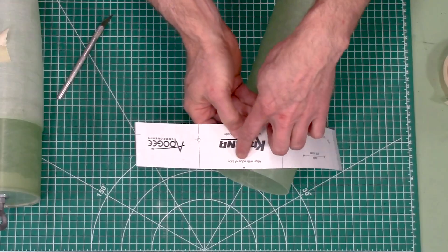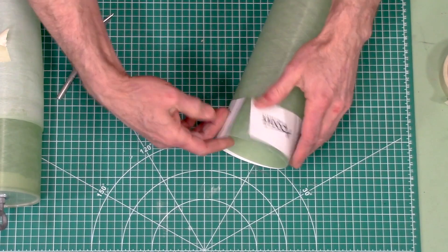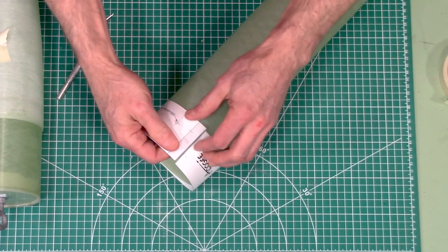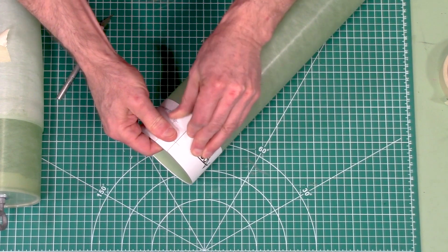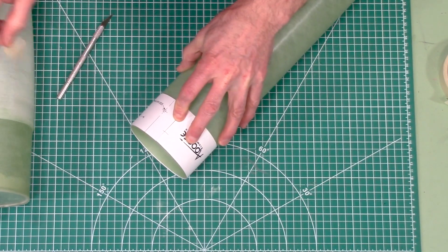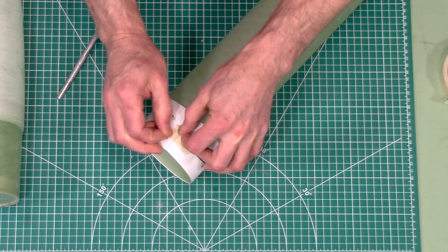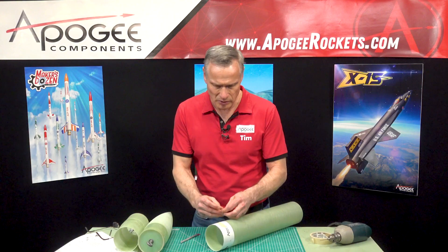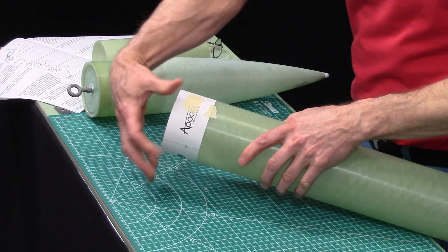On one end it'll say align with the edge of the tube so that's the direction it's going to go. Wrap it around the tube. Line up these lines right here and pull it tight and then tape it in place. I don't want to cover up that hole there. I'm going to also put a piece of tape right here so that it can't spin around the tube.